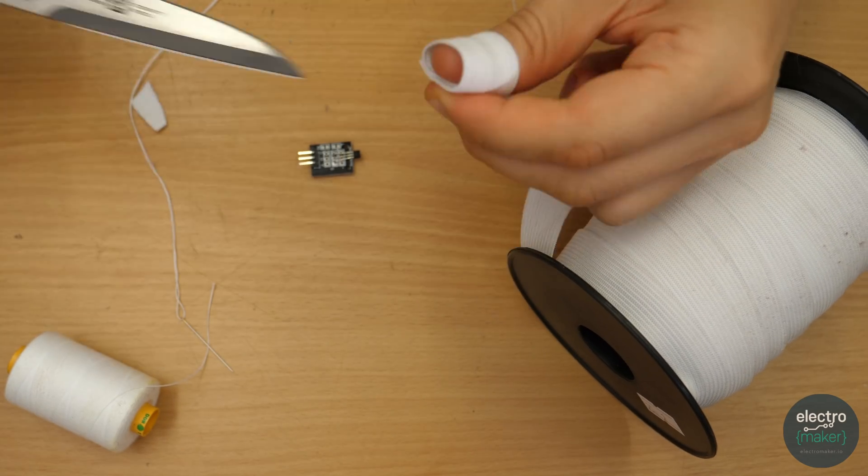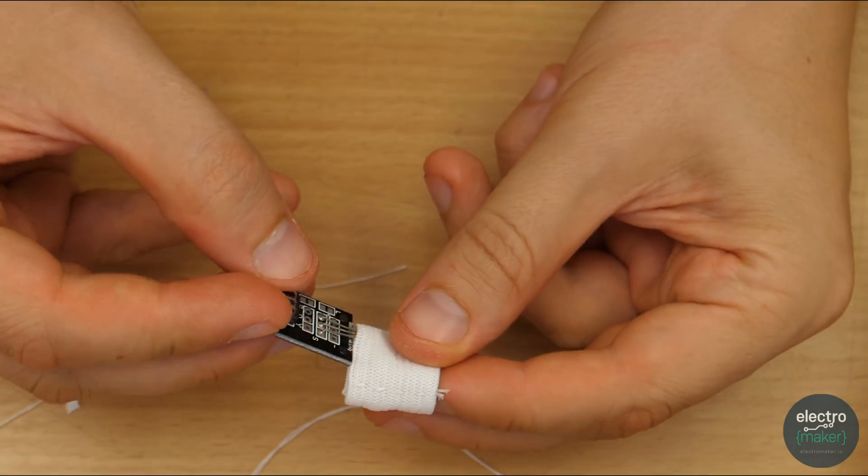Small rubber band pockets are used to hold a hall effect sensor and a magnet in place.